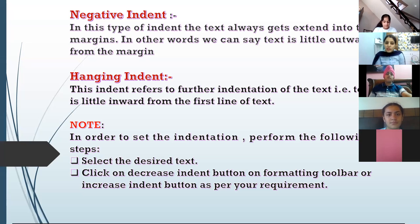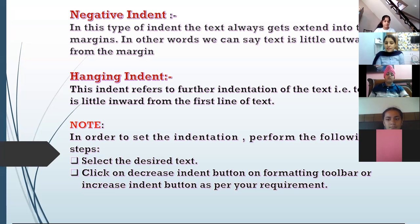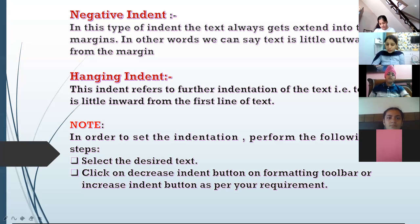Steps to set indentation: you have to select the desired text, then click on the decrease indent button on the formatting toolbar. If you want to increase indent, click on the increase indent button. So there are two buttons on the formatting toolbar: increase indent and decrease indent.